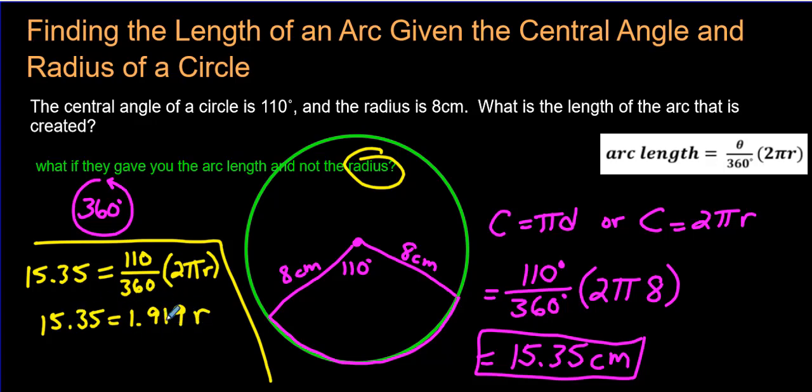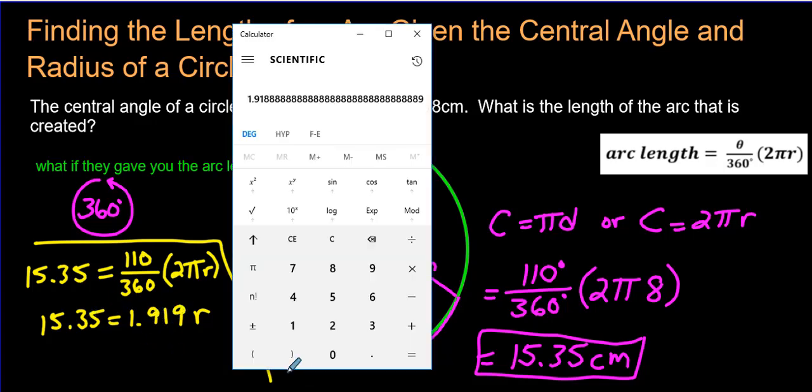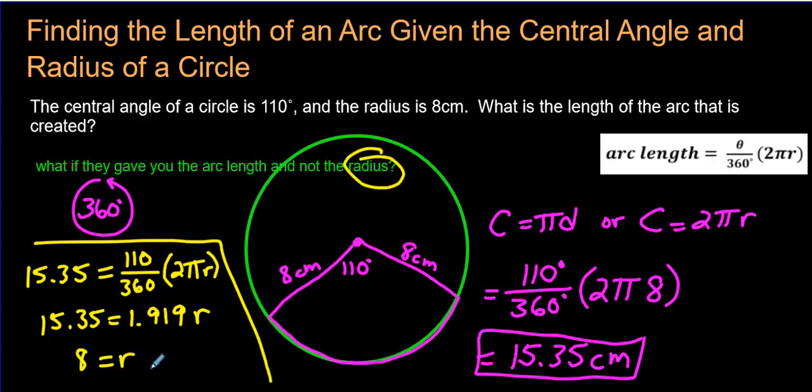The way to get rid of this, and you should know algebra by now if you're doing this stuff in grade 12, for example. To get rid of the 1.919, we need to divide both sides by that. We need to divide 15.35 divided by 1.919. And we get, let's just round it off, 7.999. Let's just round it off to 8. It's just so close to 8. And does that make sense? Is 8 what our radius was before? It is.